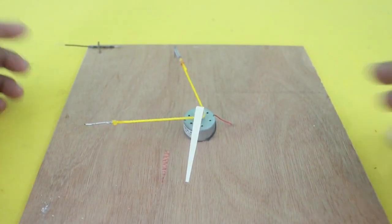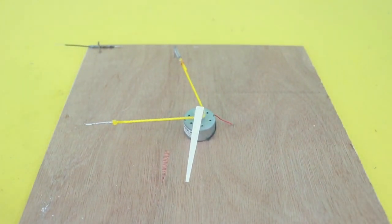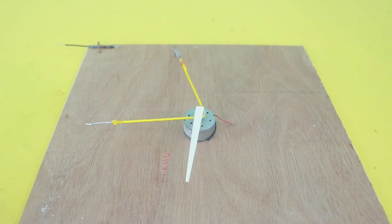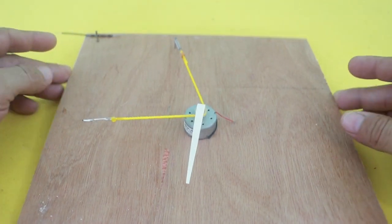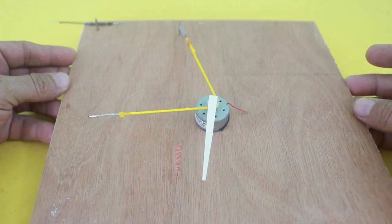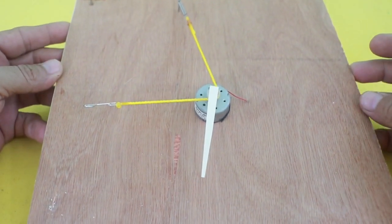Before digital ammeters and even before analog ammeters that used the d'Arsonval mechanism, people managed to measure currents using different methods and one of them was this device known as the hot wire ammeter.